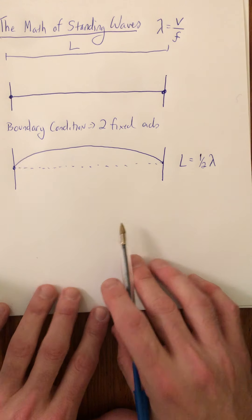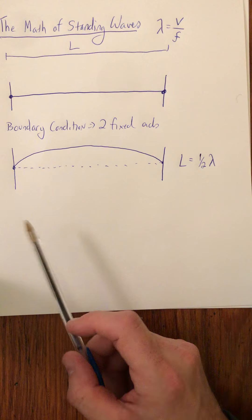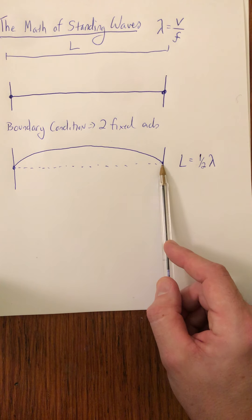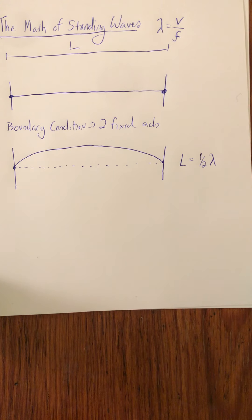Because the two ends here, because they're fixed, have to be my nodes. So we can't have those points moving. And the distance between two adjacent or consecutive nodes is half a wavelength.